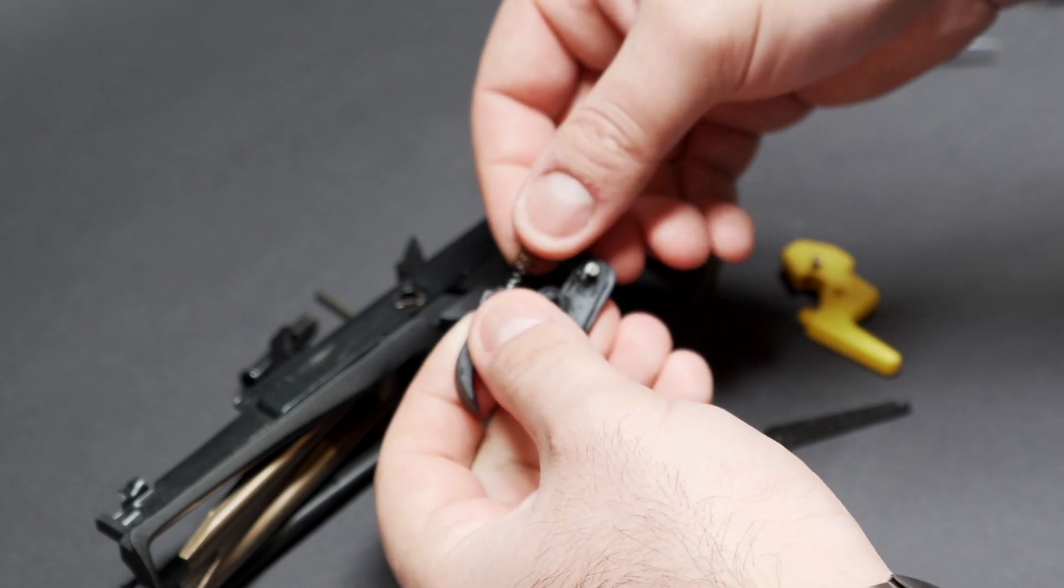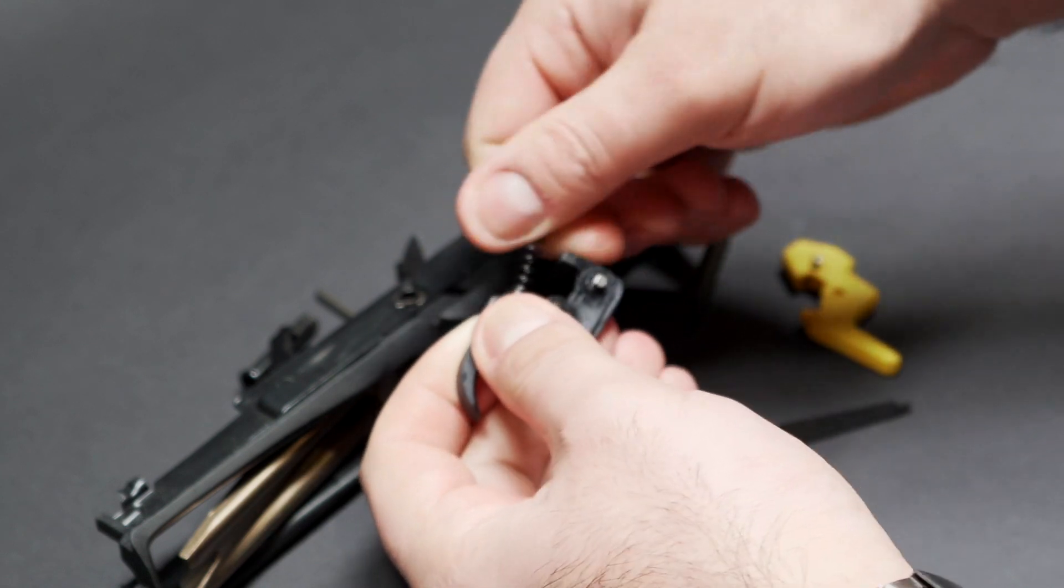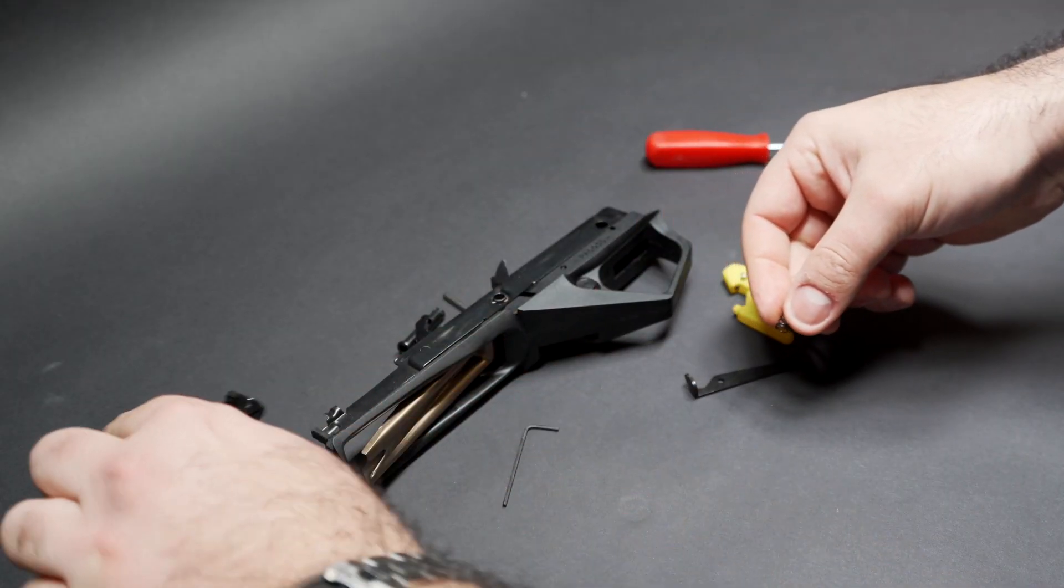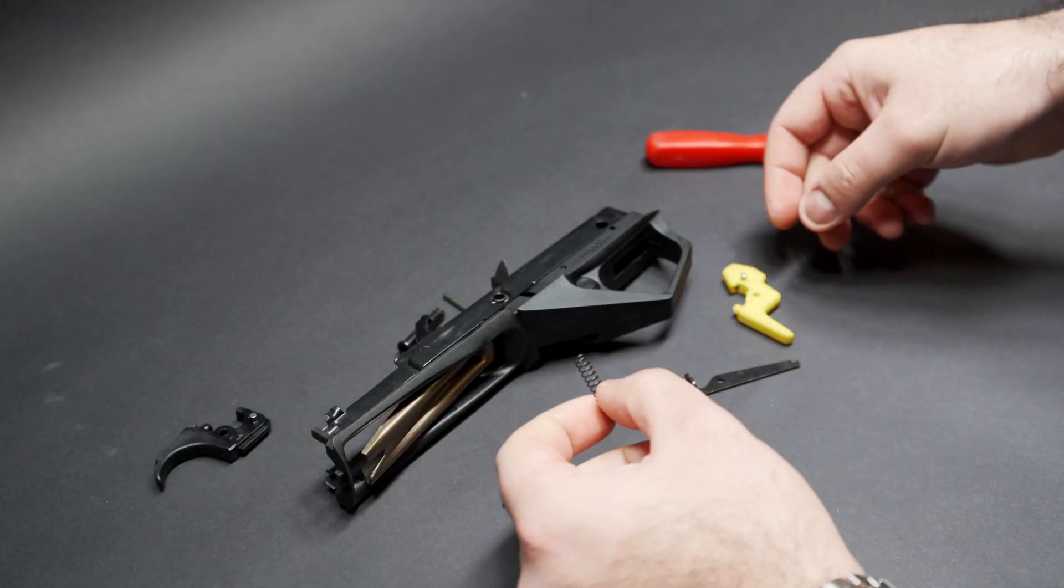And to remove the spring, give it a gentle clockwise rotation until it comes off like so. You can now put that to one side. That is for your spares bag.